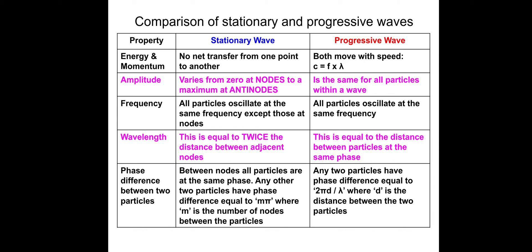And the phase difference between two particles. Now this is very important for the stationary wave because this question is examined a lot. So phase difference between two particles between nodes: in between two individual nodes, all the particles are the same phase. Any of the two particles have a phase difference equal to mπ, where m is the number of nodes between the particles. Progressive waves: any two particles have phase difference equal to 2πd/λ, where d is the distance between the two particles.